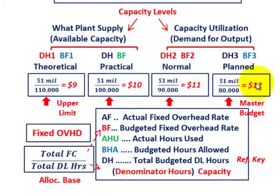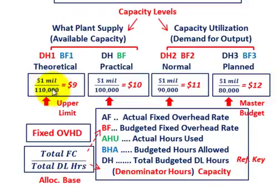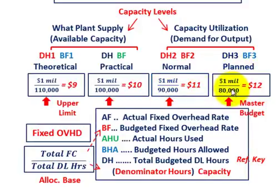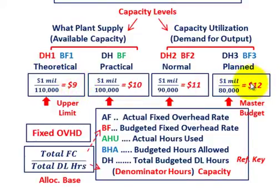You have four different capacities to look at. Based on those denominator hours, the theoretical amount is your upper limit — the maximum in this case of 110,000 direct labor hours. The practical amount is the next, at 100,000 hours. Normal was the third alternative at 90,000 hours, and the fourth alternative is the planned amount at 80,000 hours. Starting from the upper limit and working down, the upper limit produces a lower allocation rate for fixed overhead, whereas the planned amount gives the greatest fixed overhead rate allocated to your products.